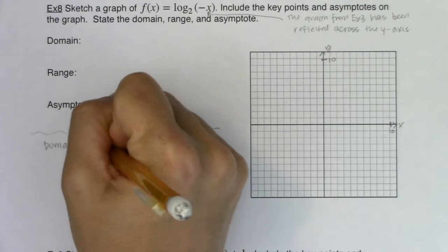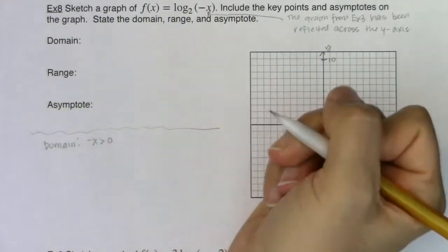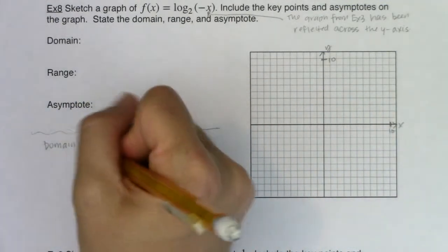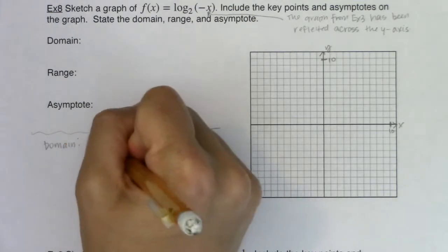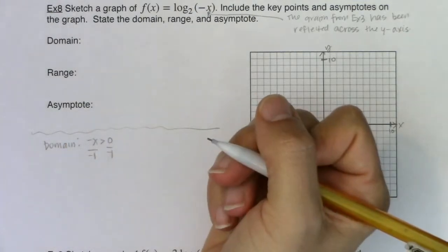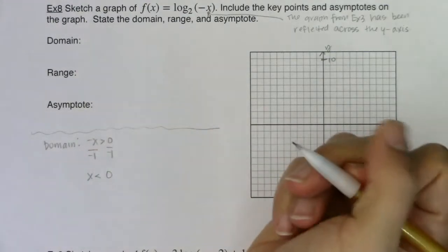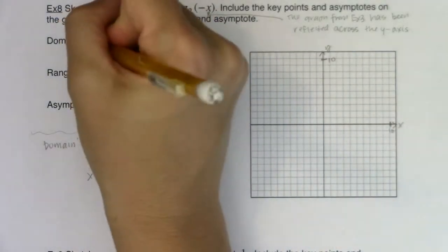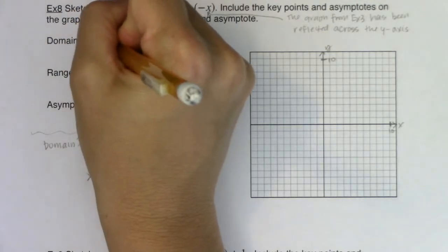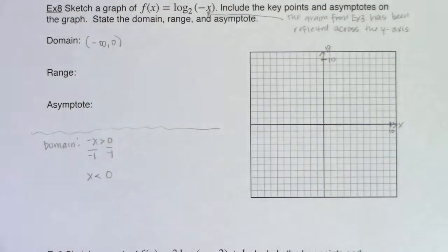Now this time my argument is negative x. I want negative x to be greater than zero. And when I solve for this, I would need to divide by negative one. And I hope your spidey senses are going off, right? I'm dividing by a negative number. So that will change the direction of my inequality. So now my domain will be from negative infinity to zero.